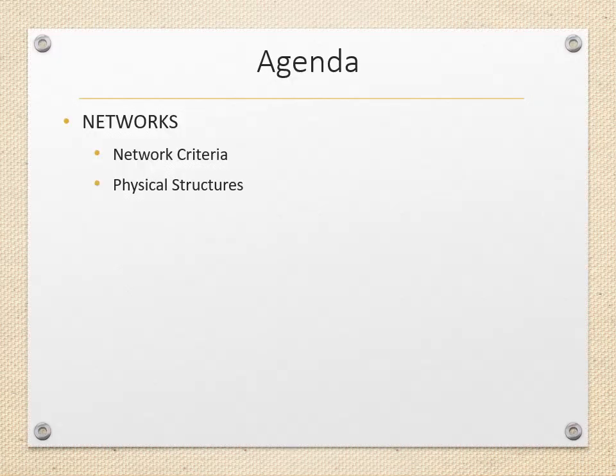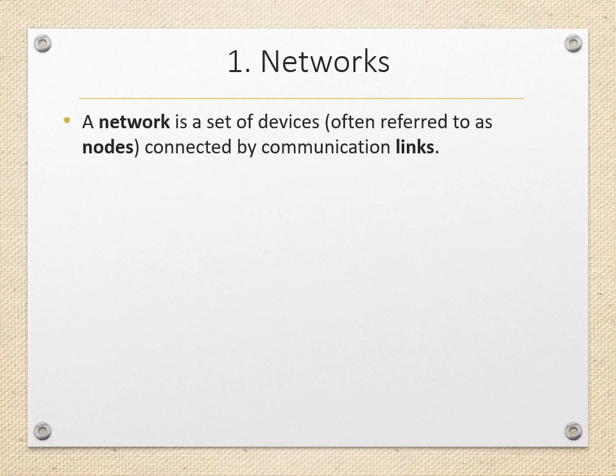In this session we will see about networks with criteria and physical structures. A network is a set of devices connected by communication links. Devices are also known as nodes, which can be a computer, printer, or any other device capable of sending and receiving data generated by other nodes on the network.